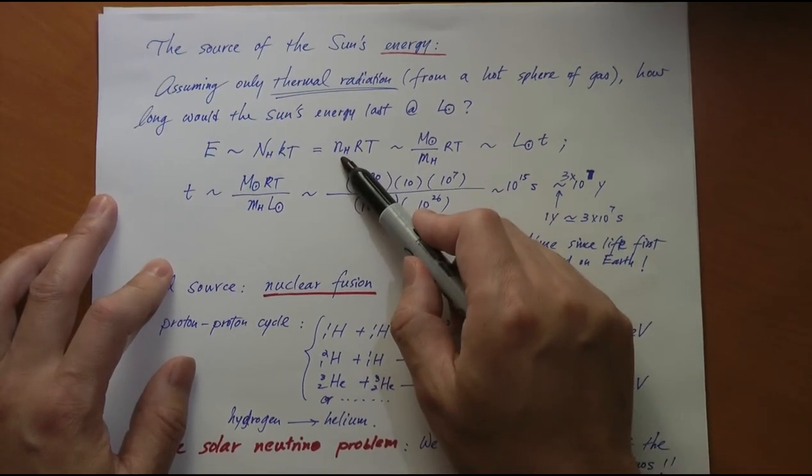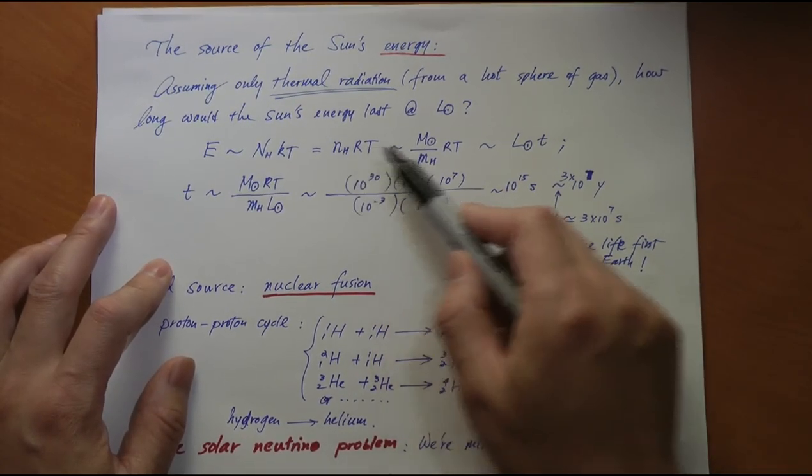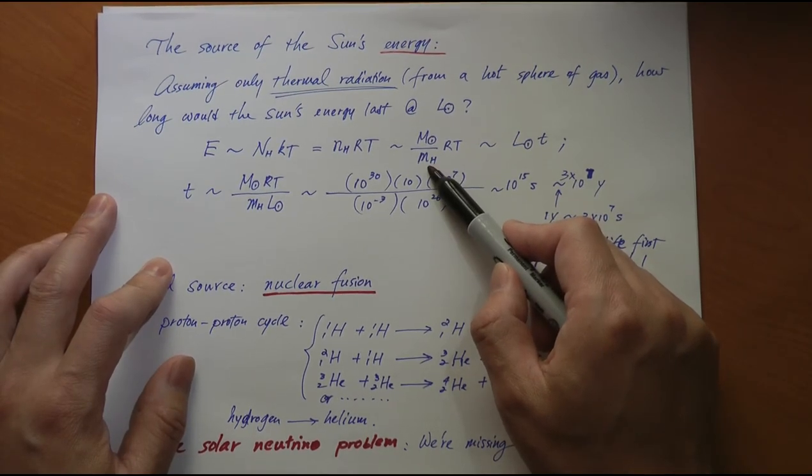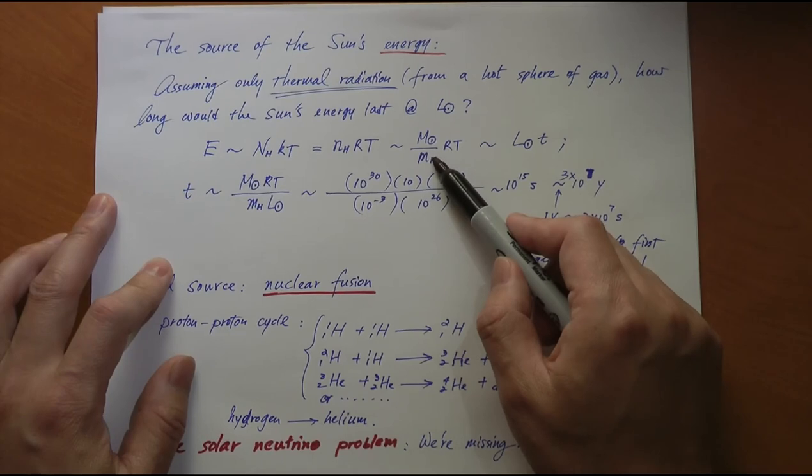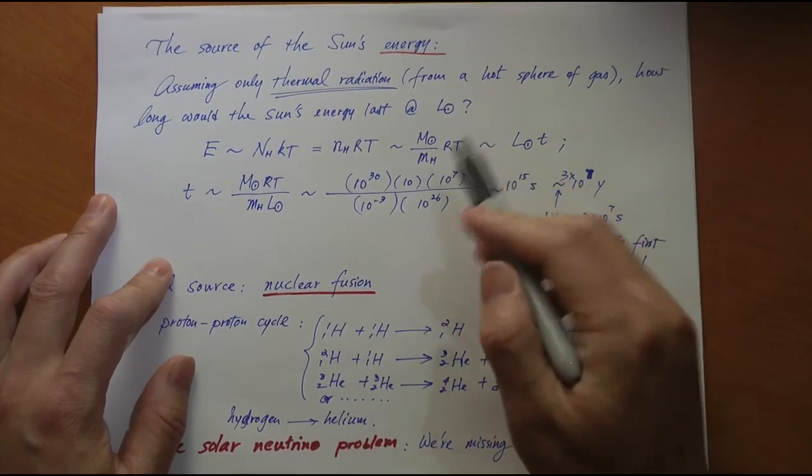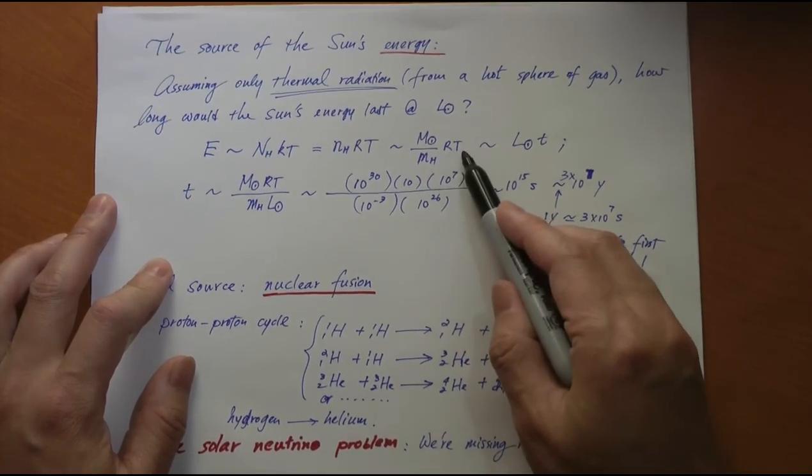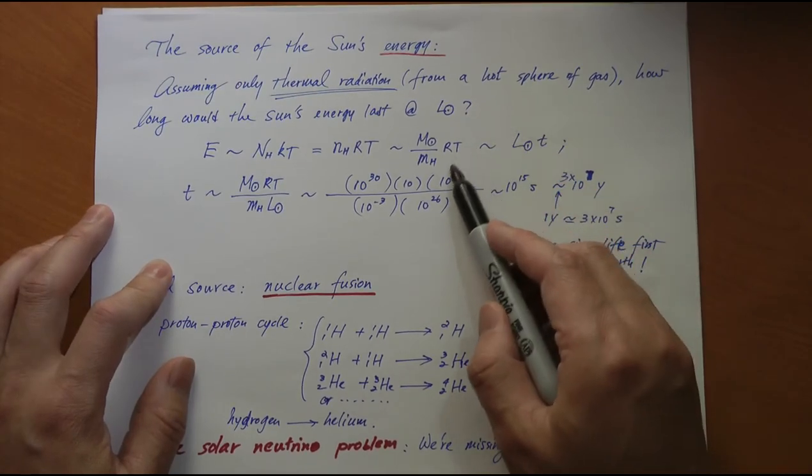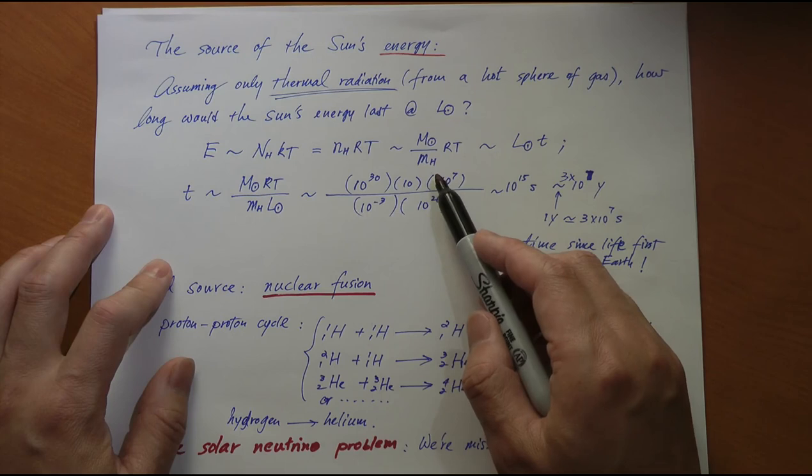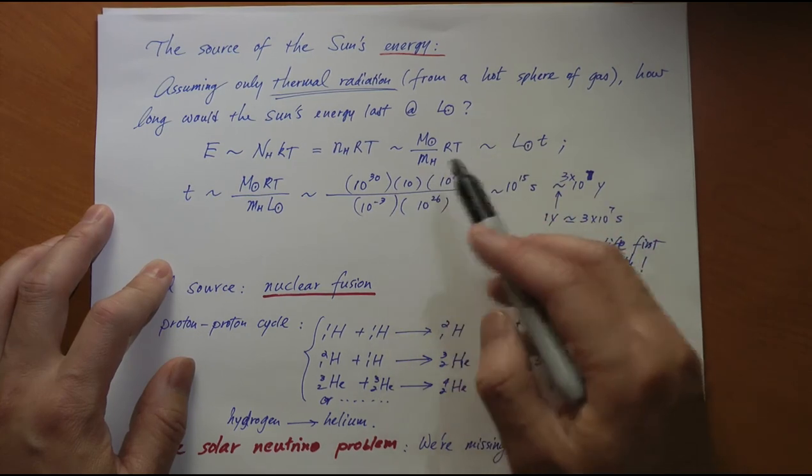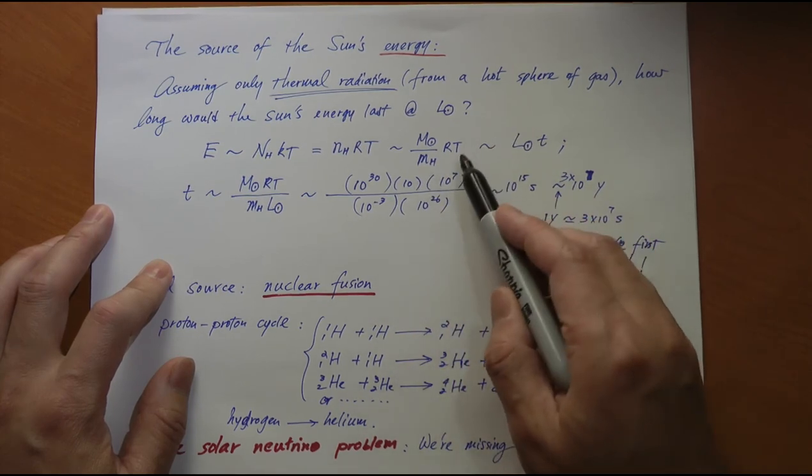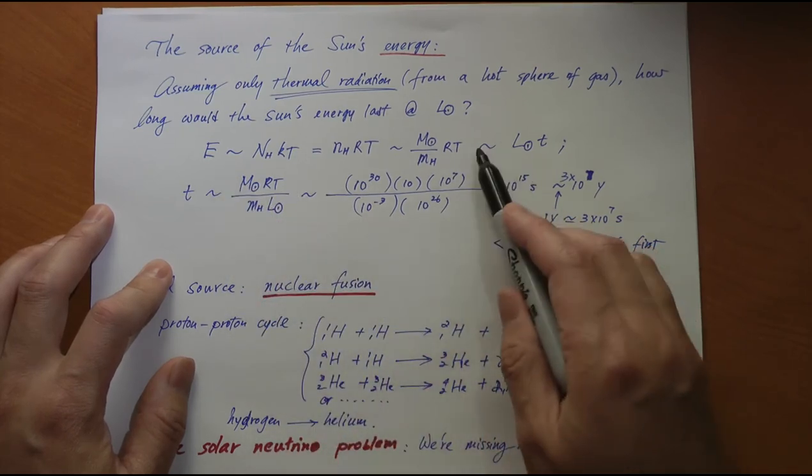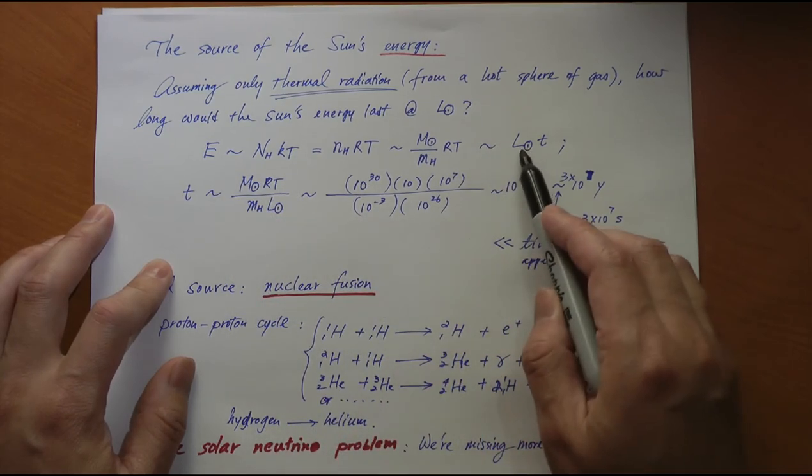T is some sort of average temperature of the sun, but let's be generous. Let's say every part of the sun has the same temperature of 10^7 Kelvin, so we're overestimating this energy a little bit. We let this be equal to the luminosity of the sun, which is the power emitted from the sun, times the time it takes for all this energy to dissipate.